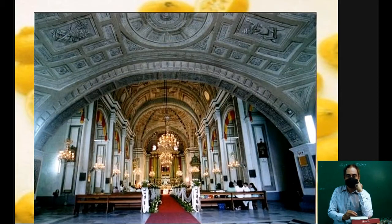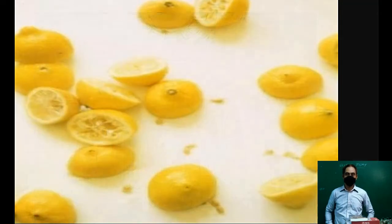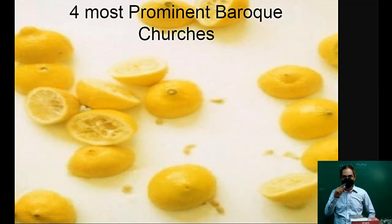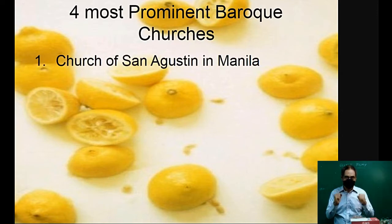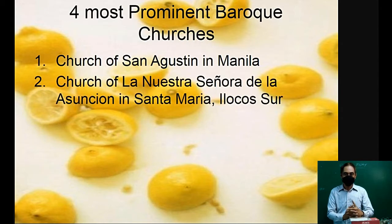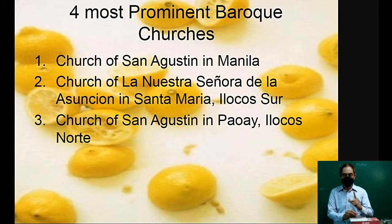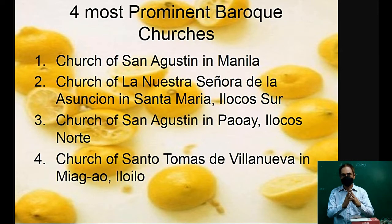This is the interior of a Baroque church, using arches and vaulting similar to that of the Gothic style. The four most prominent Baroque churches in the Philippines are: number one, the Church of San Agustin in Manila; number two, the Church of La Nuestra Señora de la Asuncion in Santa Maria, Ilocos Sur; number three, the Church of San Agustin in Paoay, Ilocos Norte; and number four, the Church of Santo Tomas de Villanueva in Miagao, Iloilo.